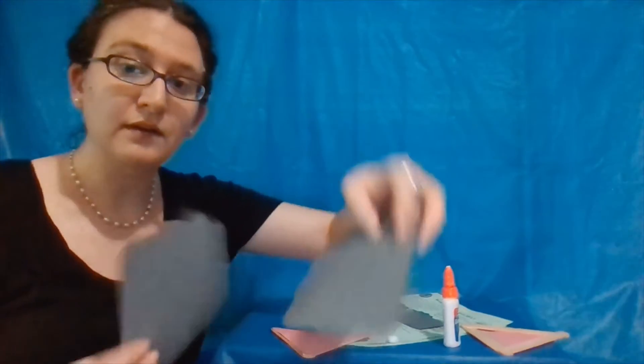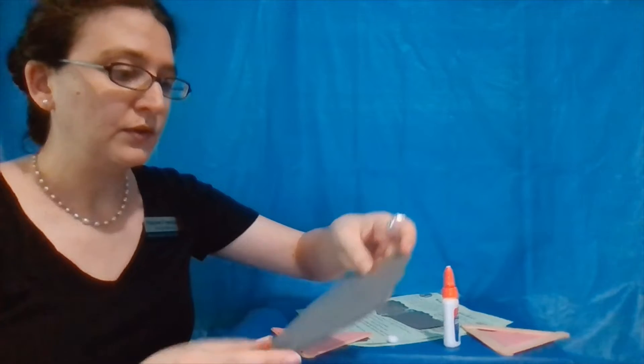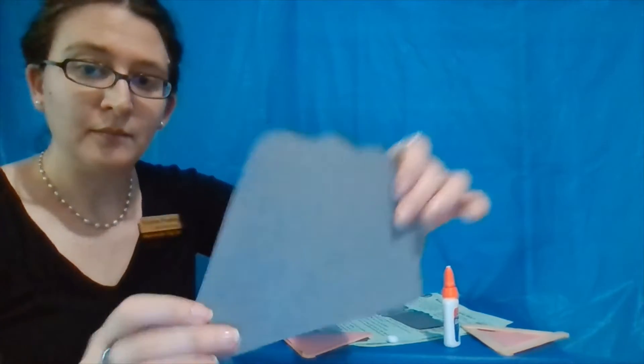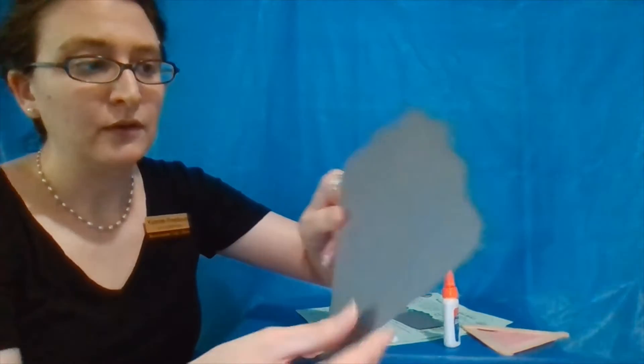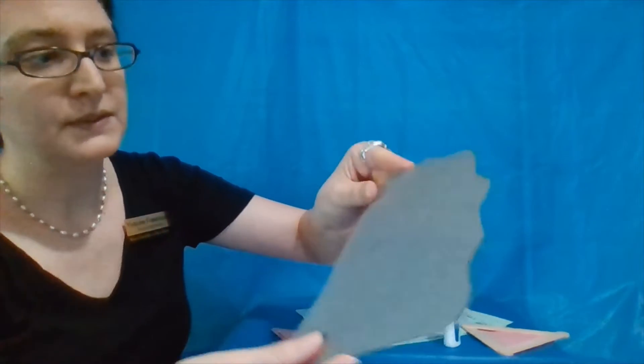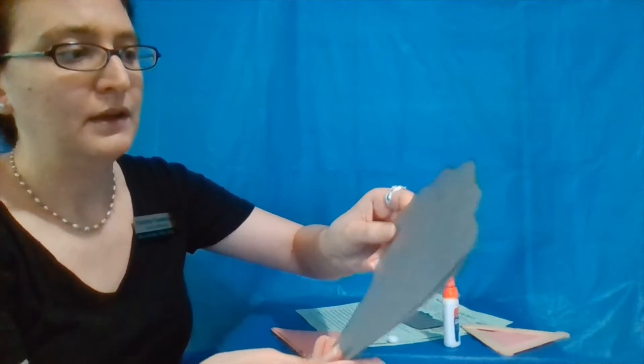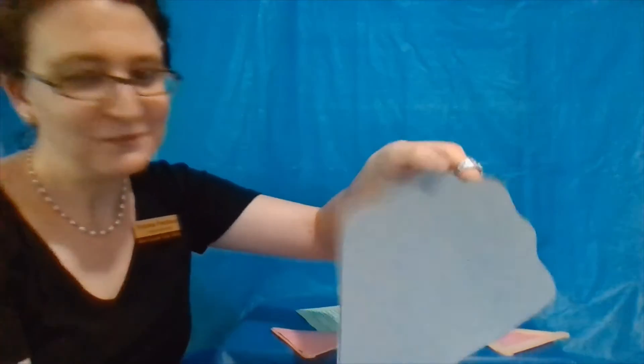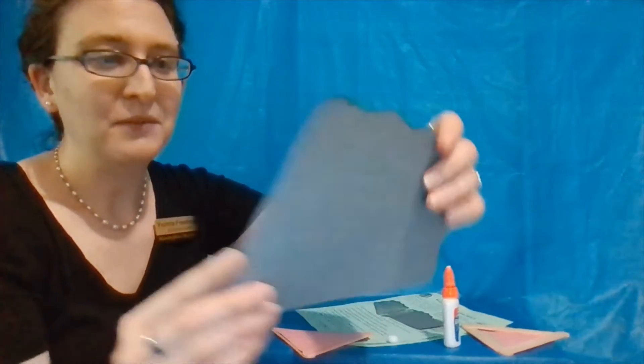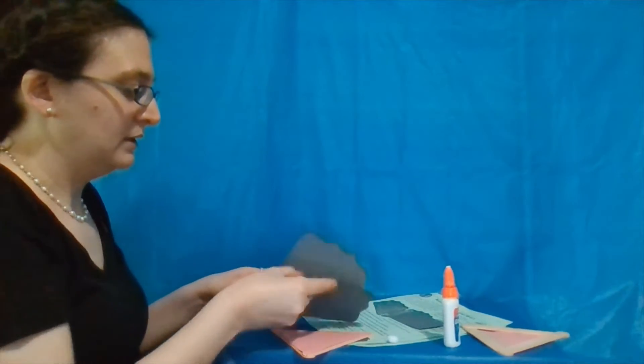Now we're going to take the shells of our oyster and make sure that they line up. So when we open it and close it, the edges line up. Because if they don't line up, if you do it the wrong way, it's going to end up looking like that. We don't want that. So we're going to make sure that they line up and we're going to open it.